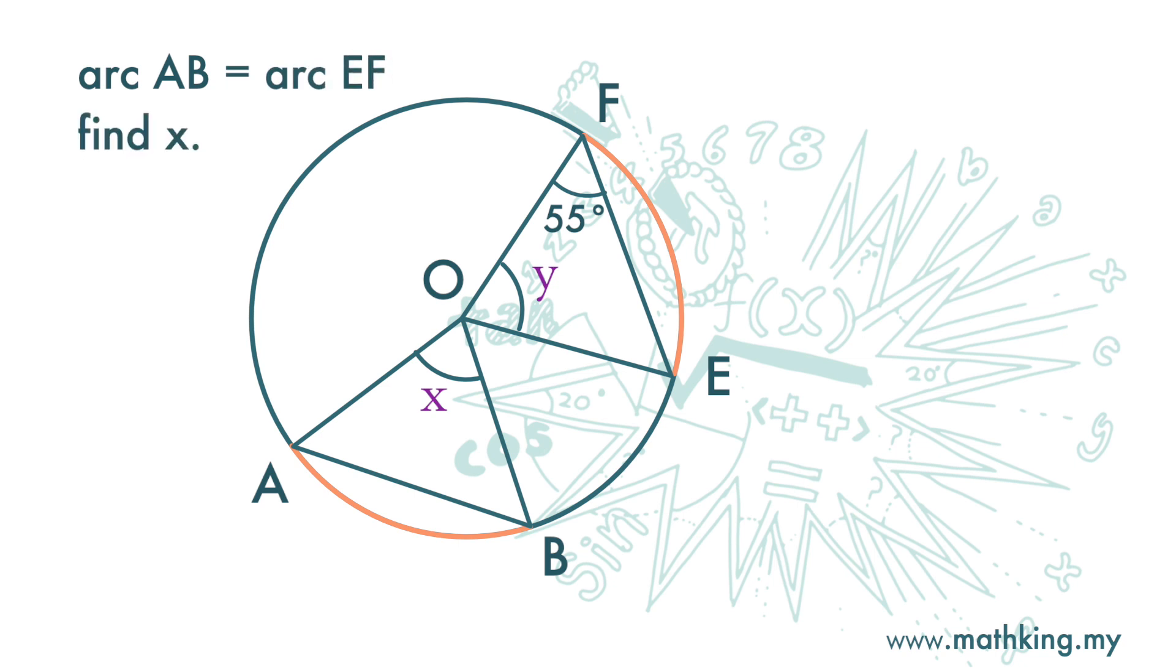Here we want to find x. Arc AB and arc EF are equal, so the angles x and y are also equal. To get angle x, we can find it from angle y.